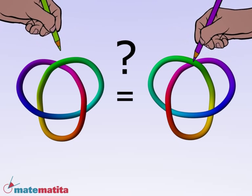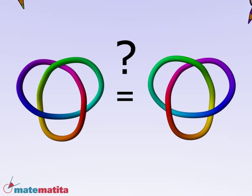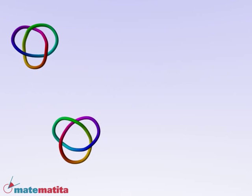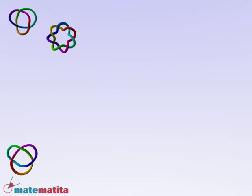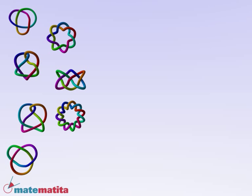How can we distinguish different knots or recognize different drawings of the same knot? A way to approach such a problem is to relate the realm of knots, closed strings, to that of braids.